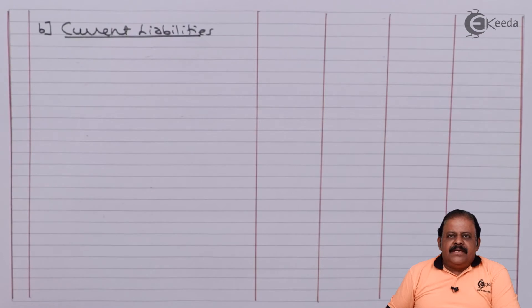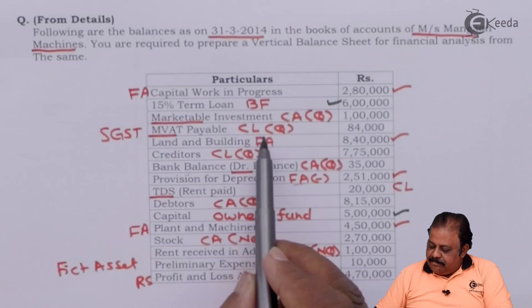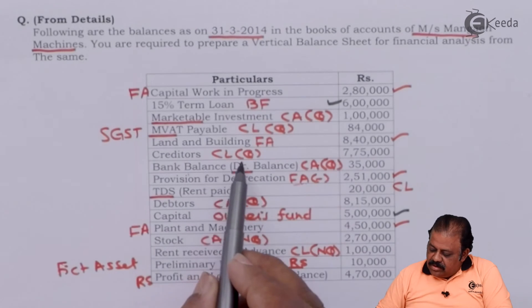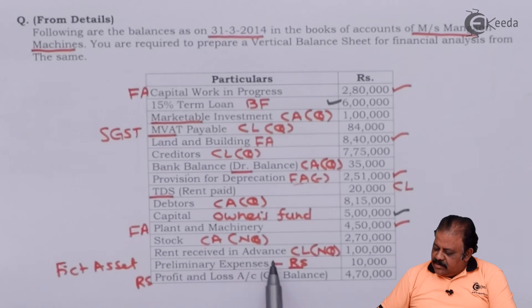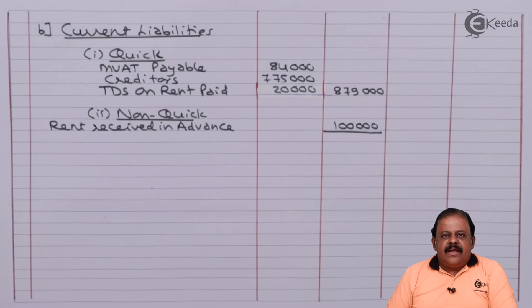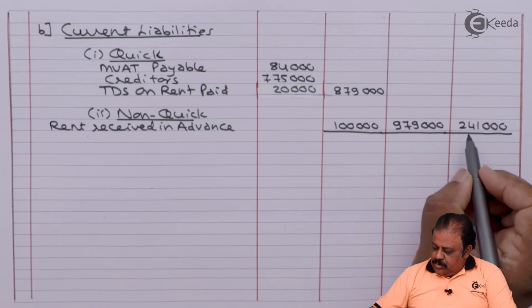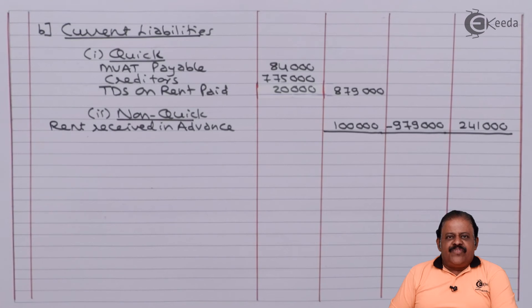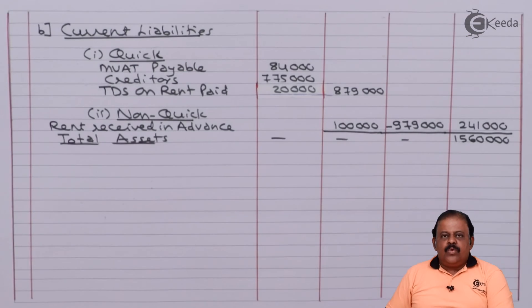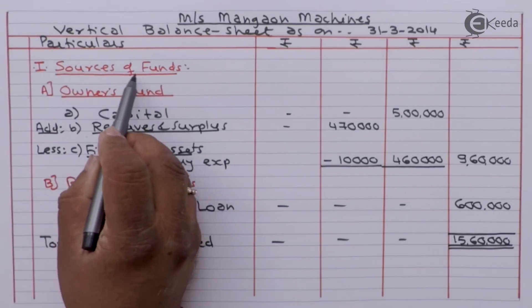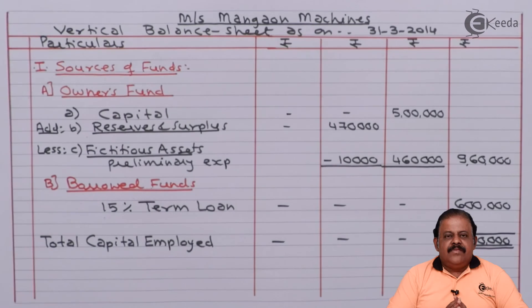Current liabilities — quick: MVAT payable of 84,000 and creditors of 7 lakhs 75,000, totalling quick current liabilities of 8 lakhs 79,000. Non-quick: rent received in advance of 1 lakh. Total current liabilities: 9 lakhs 79,000. Deducting from total current assets, working capital is 2 lakhs 41,000. Adding to total fixed assets of 13 lakhs 19,000, total assets come to 15 lakhs 60,000 — matching total sources of funds (capital employed), so the balance sheet tallies.